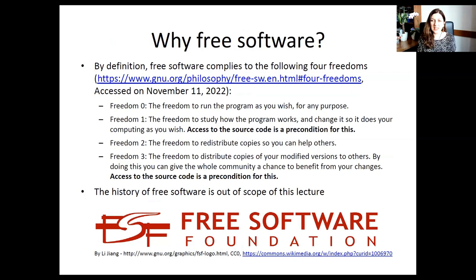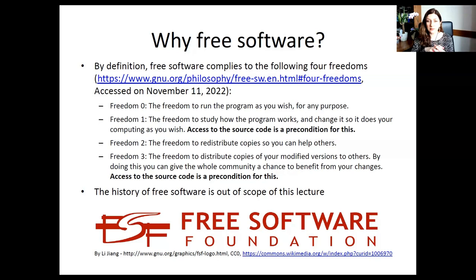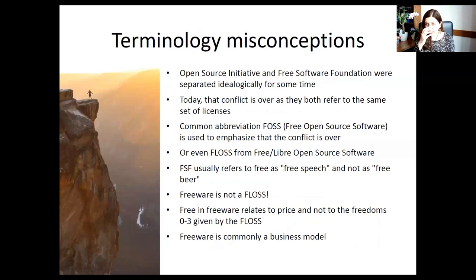What is free software? The definition lies in four core freedoms, numbered zero to three. Freedom 0 is to run the program for any purpose as you wish. Freedom 1 is to study how it works. Freedom 2 is to redistribute copies freely. Freedom 3 is to distribute copies of your modified versions. Freedoms 1 and 2 in particular require access to the source code — which we usually don't get when we buy software products. Any software and any license that provides these four freedoms qualifies as free software.